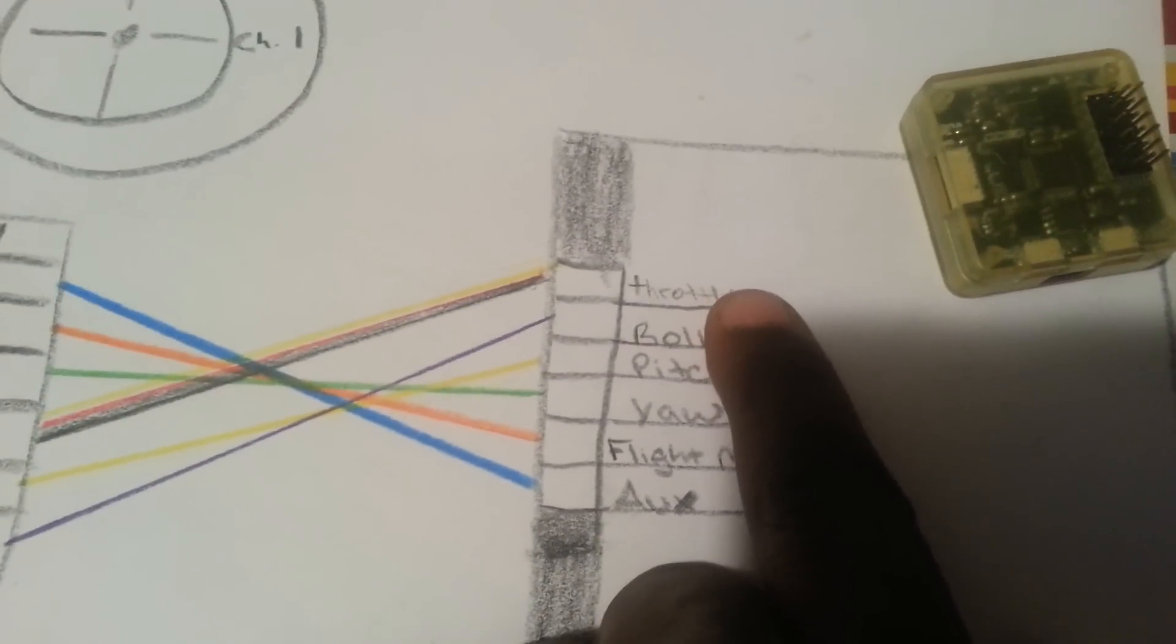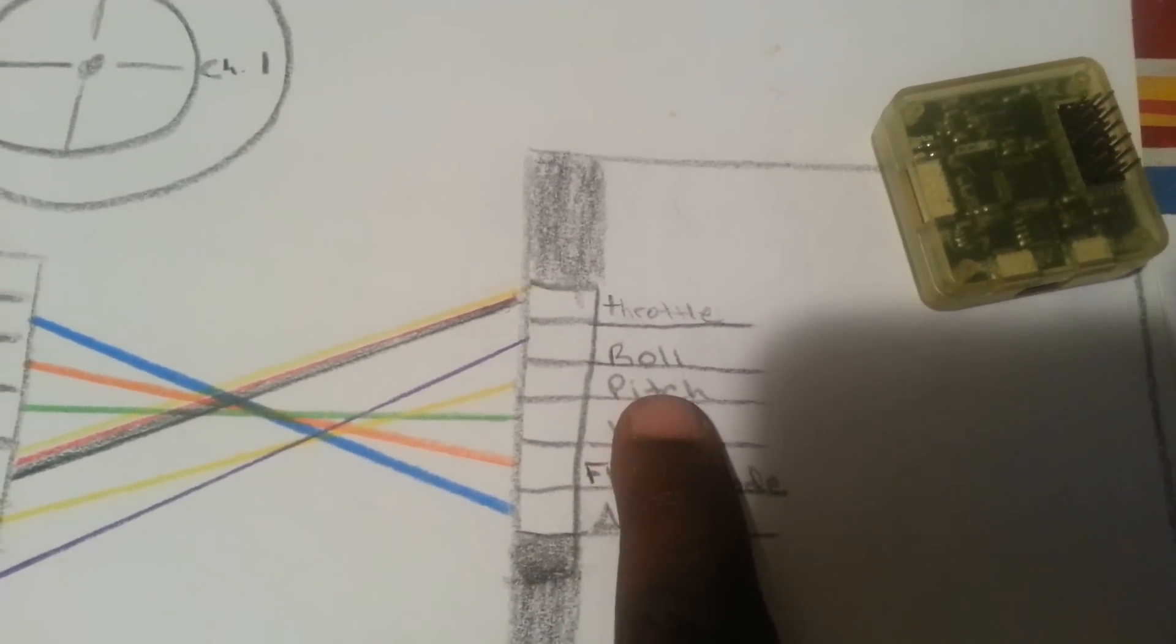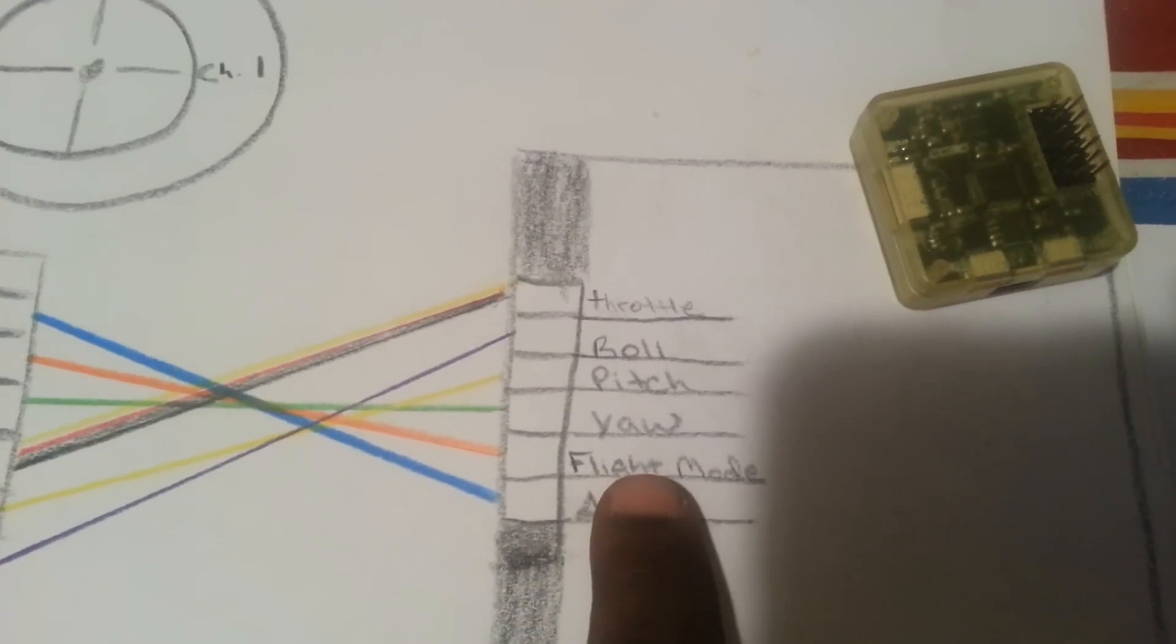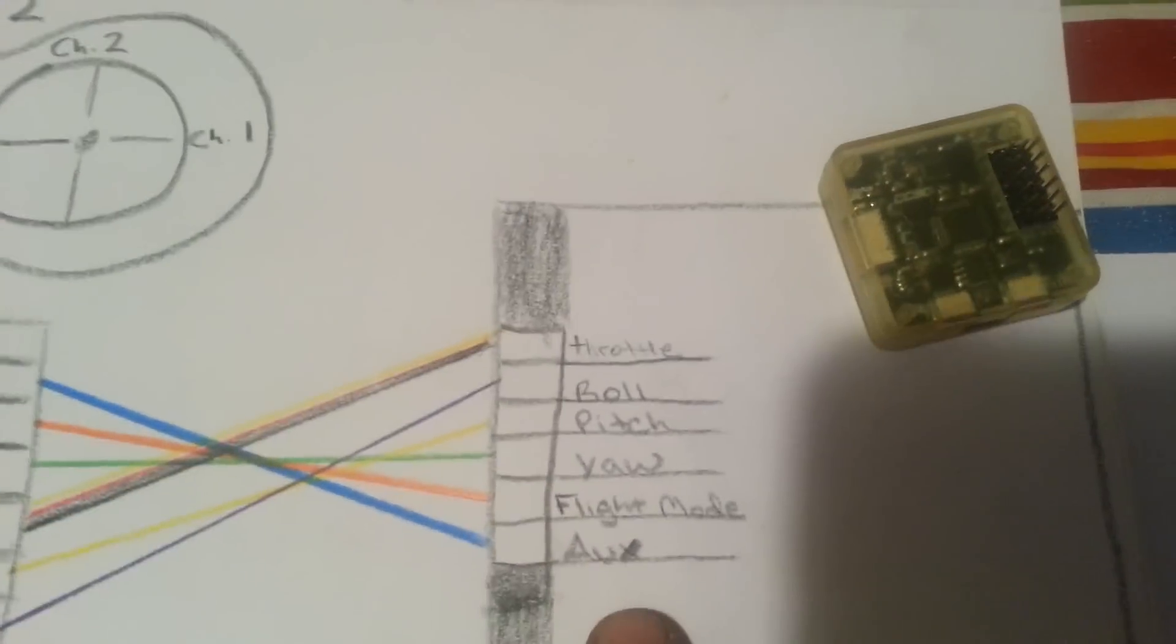On the CC3D, from top to bottom, if it's set up this way, from the top to the bottom, it's set up to be throttle on the first pin, roll, pitch, yaw, flight mode, and auxiliary.